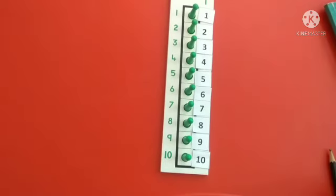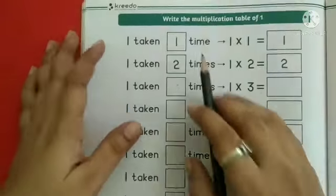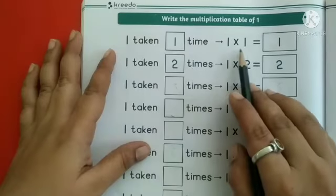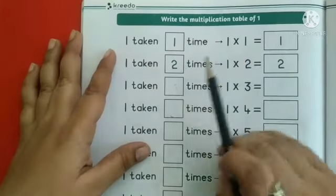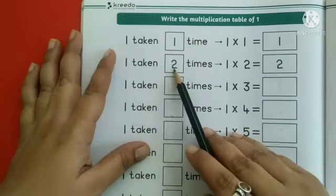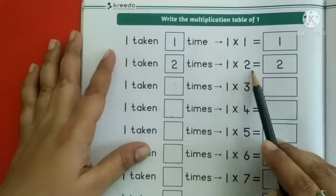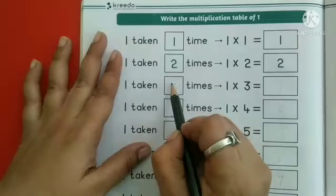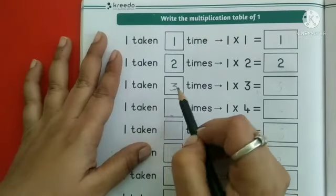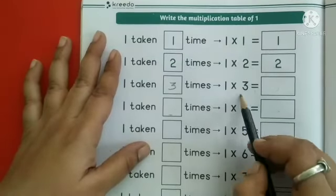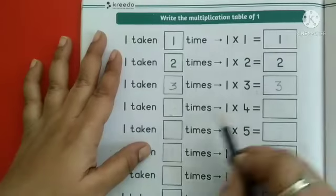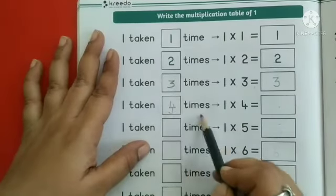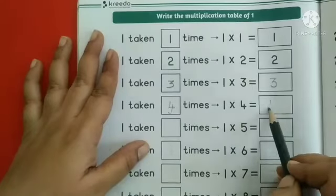Let's do this activity with textbook. Here 1 taken 1 time. 1 into 1 is equal to 1. Next 1 taken 2 times. 1 into 2 is equal to 2. Next 1 taken 3 times. Write number 3 here. Next 1 into 3 is equal to 3. Write number 3. Next 1 taken 4 times. 1 into 4 is equal to 4.